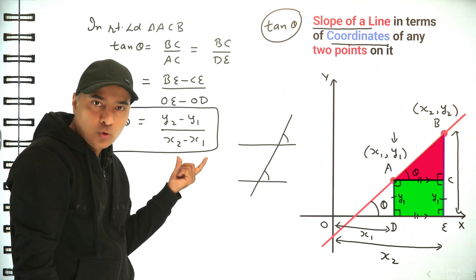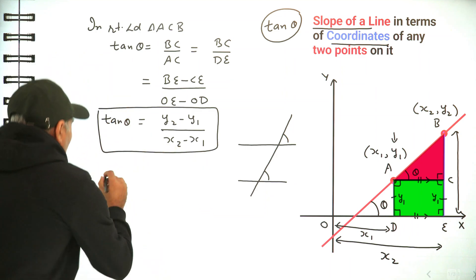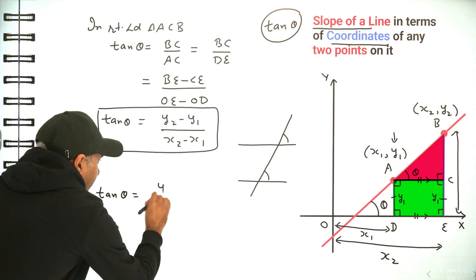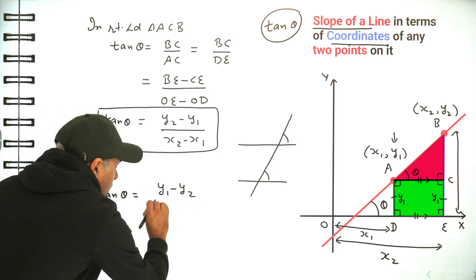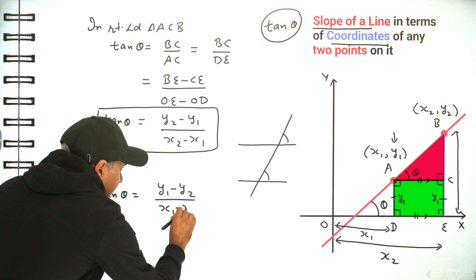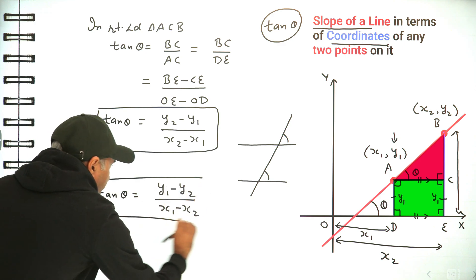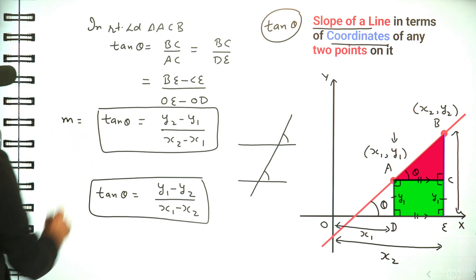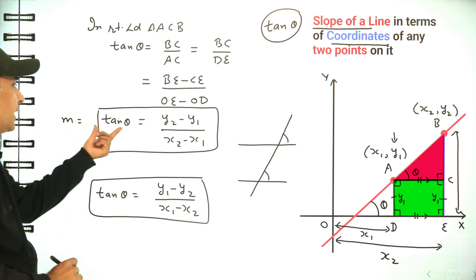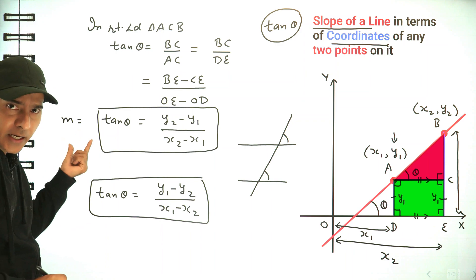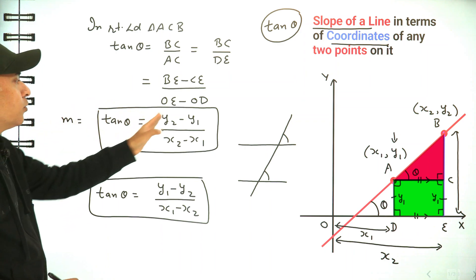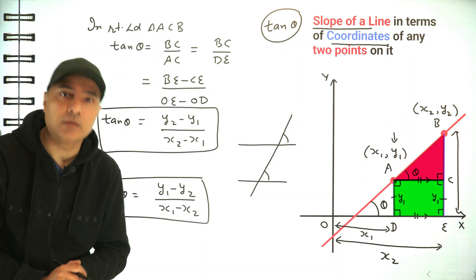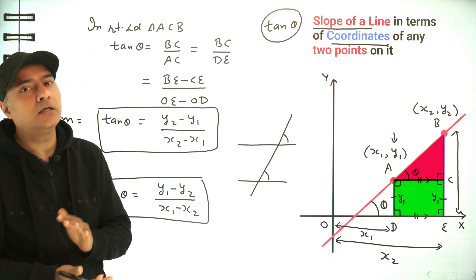So tan(theta) is the difference of the y-coordinates over the difference of the x-coordinates of the two points. You can also write it as (y1 minus y2) over (x1 minus x2), which is equivalent. Using the standard symbol m for the slope: m equals (y2 minus y1) over (x2 minus x1).